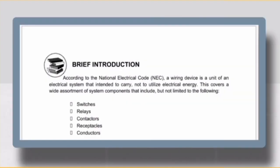Base sa National Electrical Code o NEC, ang wiring device ay isang bagay na daluyan ng kuryente. Hindi gumagamit o nagkukonsumo ng electrical energy. Kapag sinabing wiring devices, ito yung iba't ibang uri ng electric components. Ang mga halimbawa nito ay switches, relay, conductors, receptacles, at marami pang iba.